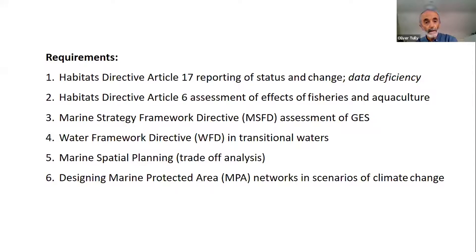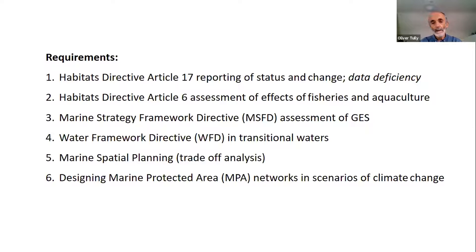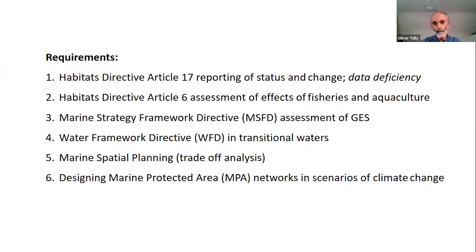Why would we do that? Well, there's an onerous list of requirements that the Marine Institute and other agencies are required to report under various articles of various directives. The National Parks and Wildlife Service need to report under Article 17 on the status and change of reef habitat in particular — that's an Annex 1 habitat — and there is a big data deficiency in that respect. The Institute itself is responsible for Article 6 assessments of the effects of fisheries and aquaculture, and the bar is set high: we have to prove the absence of significant effects.